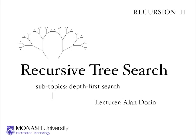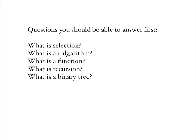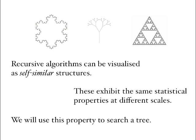This is the second video on recursion, and in this lecture we'll look at applying recursion to search a binary tree. In particular, we'll be using the depth first search as our example. Recursion is typified by its production of structures that are self-similar — at different scales these structures exhibit statistically similar properties. We'll look at how we use this property of self-similarity to solve problems, in particular how to search a tree.